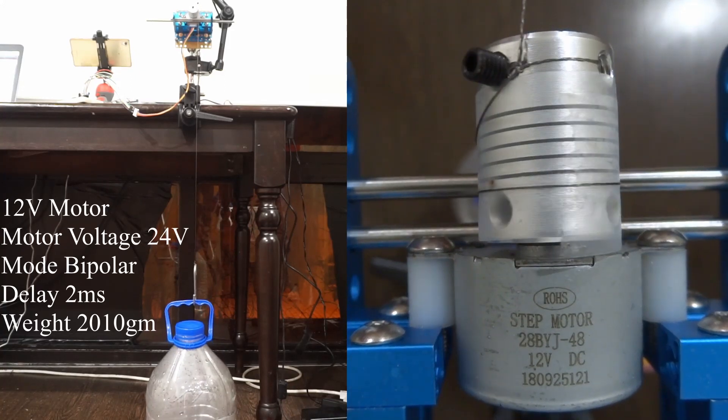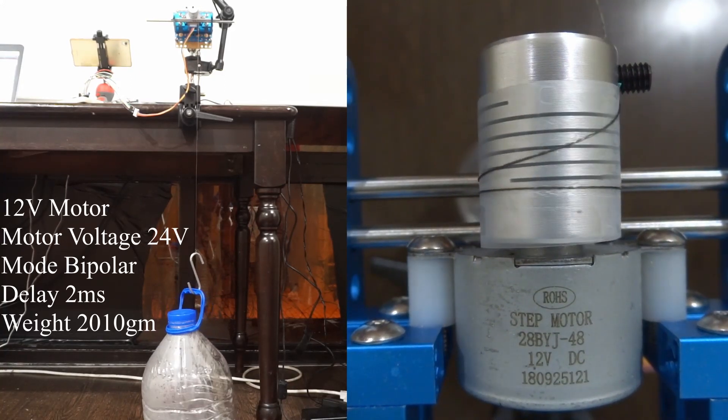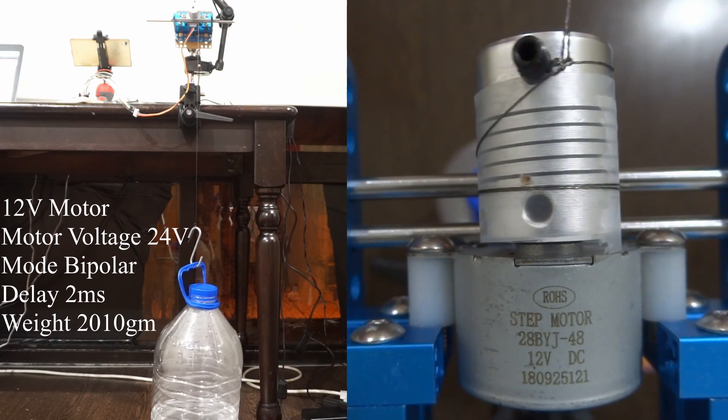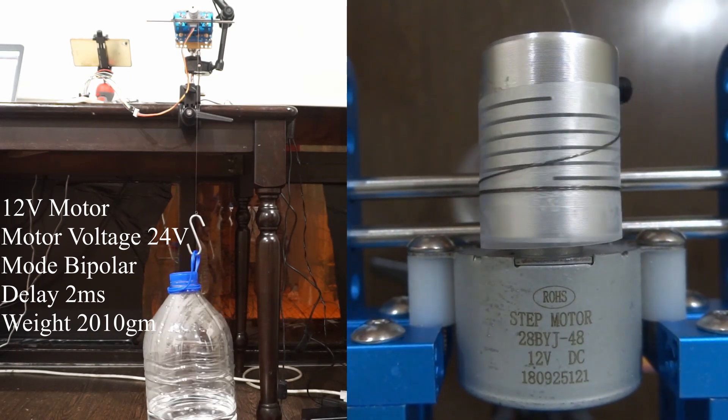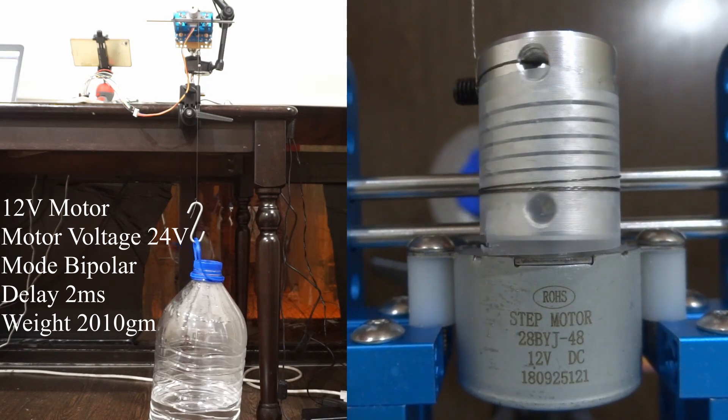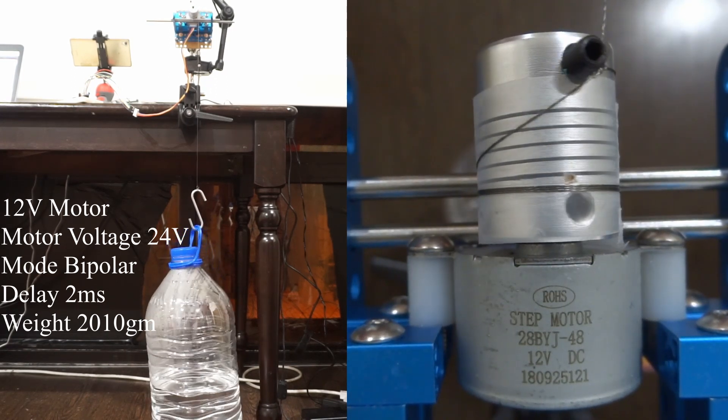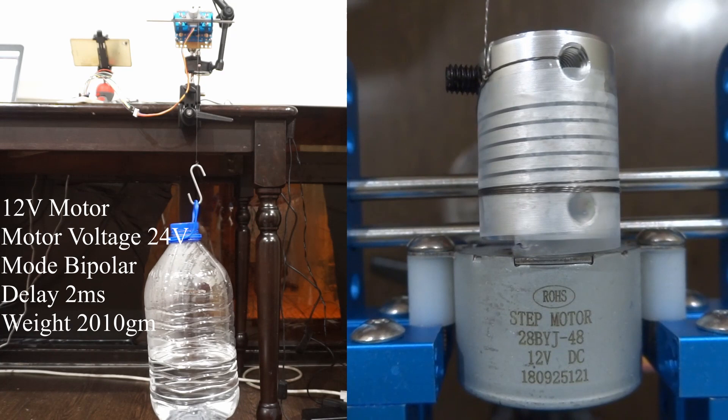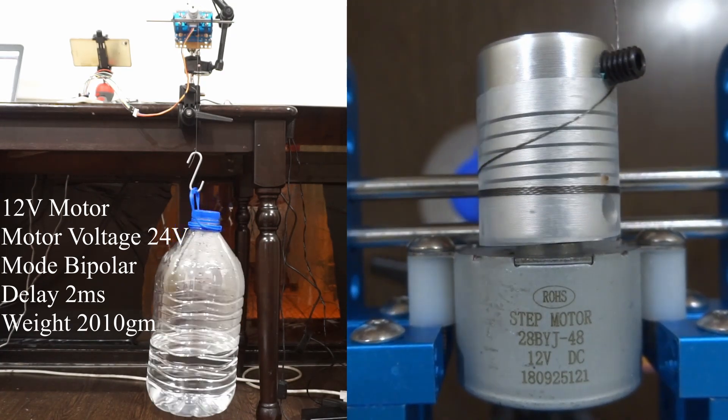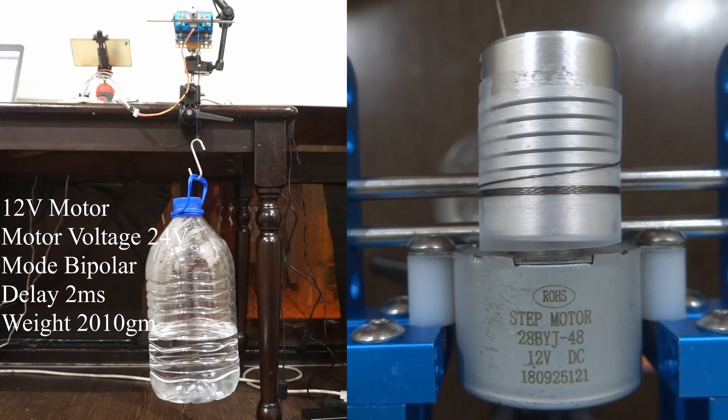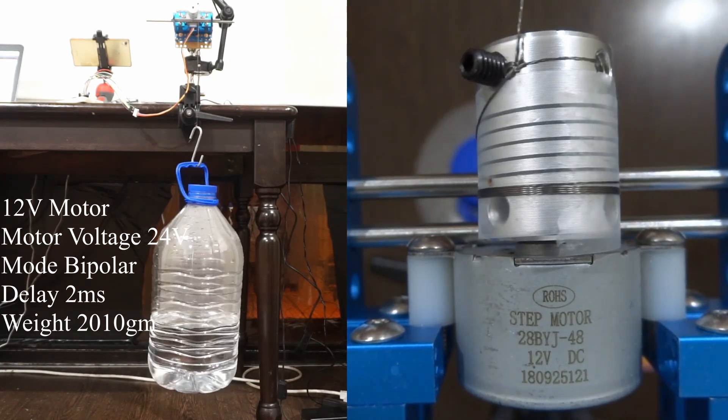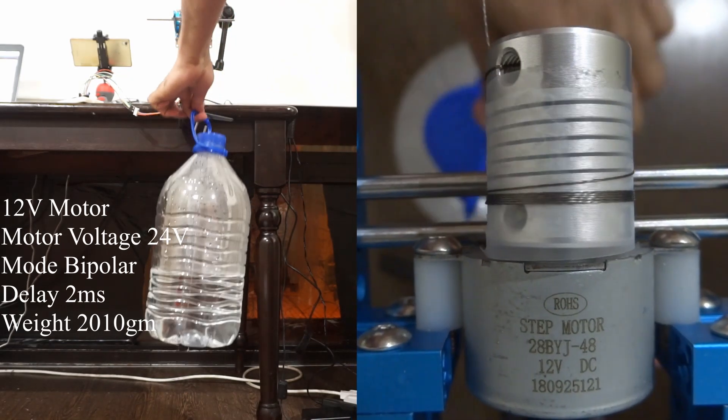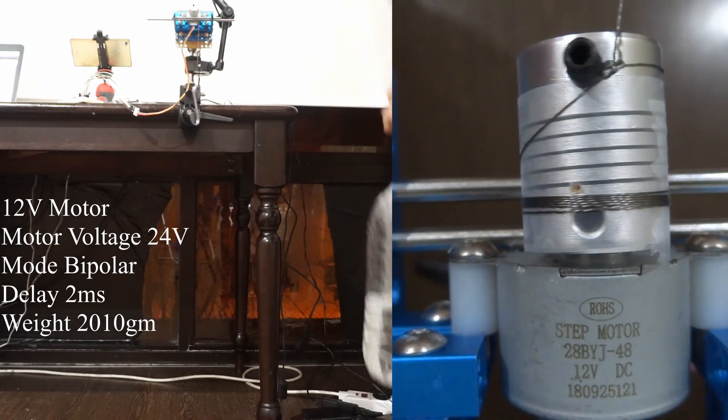The weight of the bottle now is 2.01kg. Not only is it faster but it is able to reach the top.